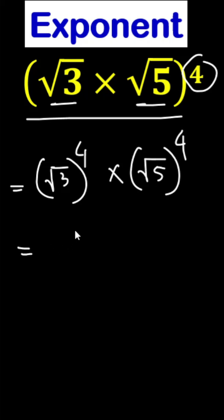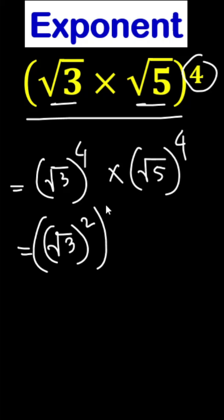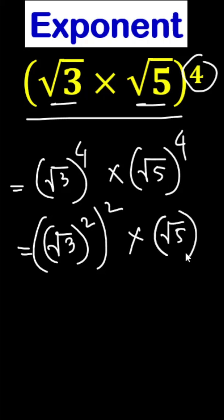Then we can write root 3 squared and over square, times similarly root 5 squared and over. Here we can use a second bracket squared for both terms — this one also the same, we can use a second bracket.